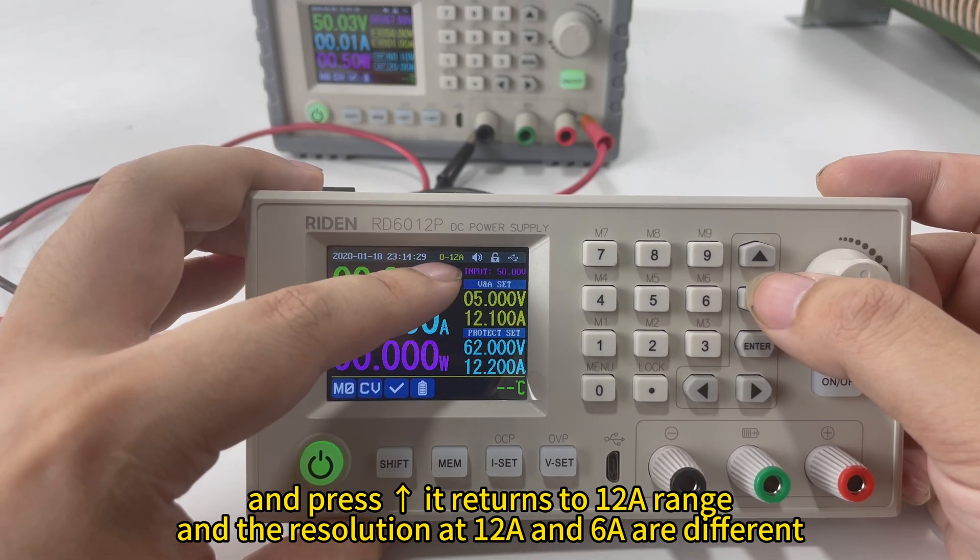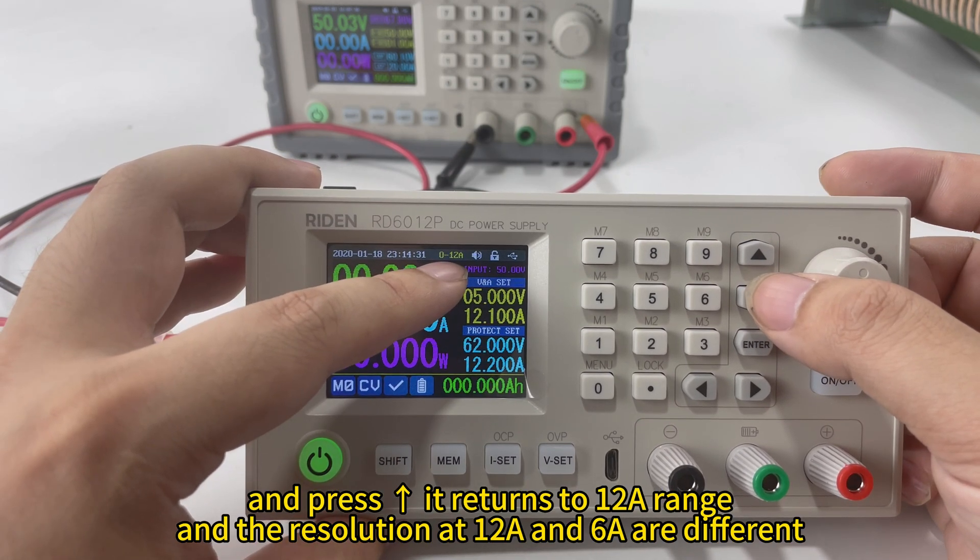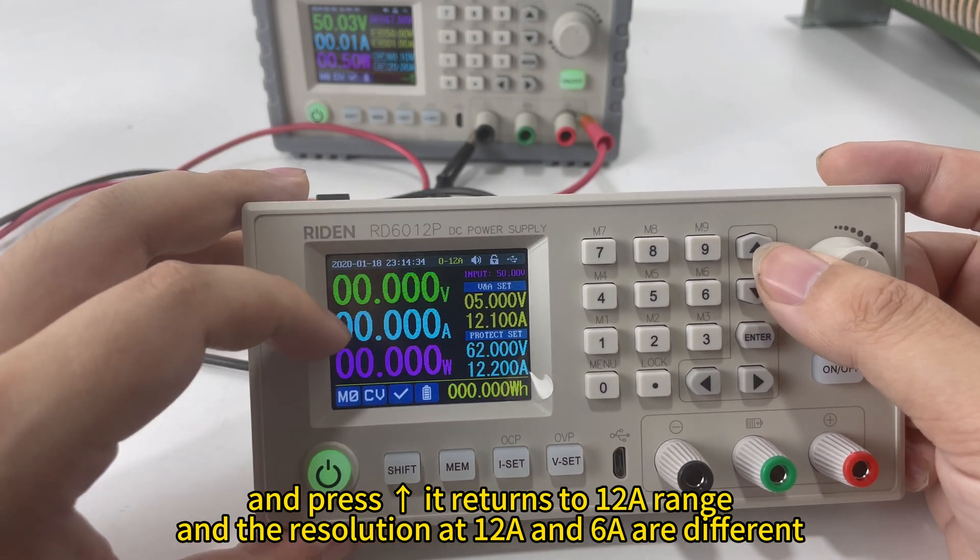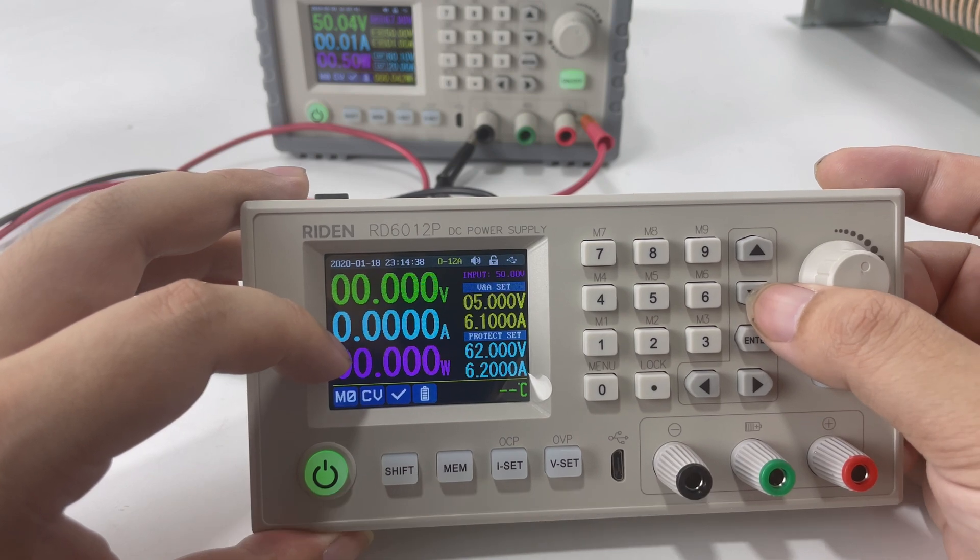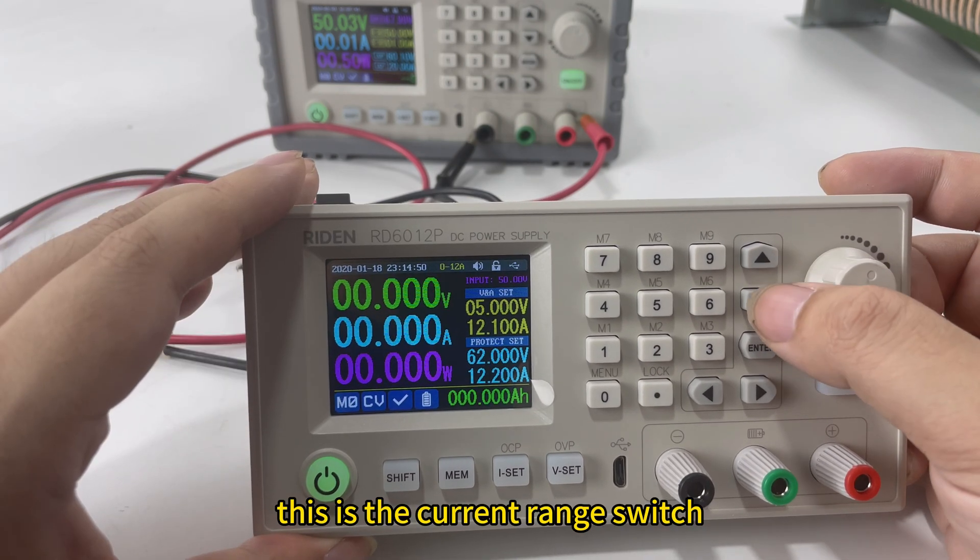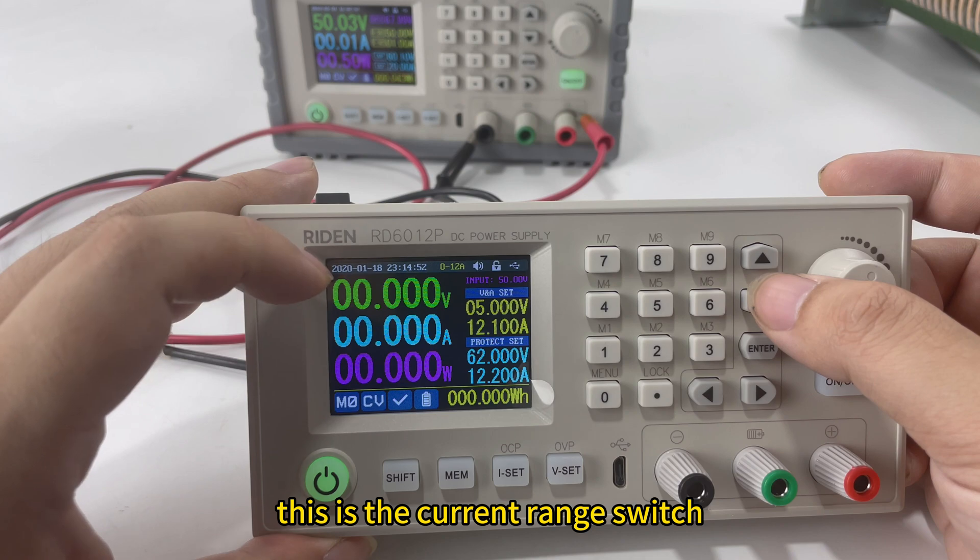Press the up button, it returns to 12A range. And you can see here, the current decade will change. This is the current range switch.